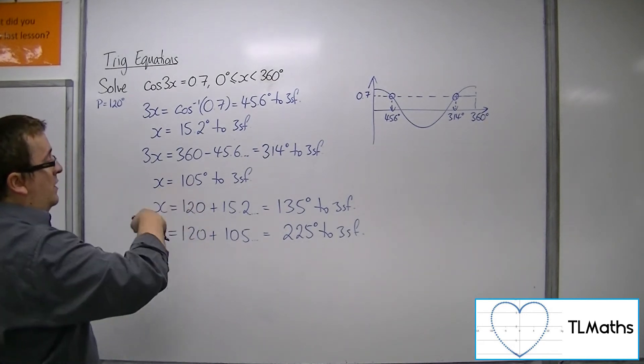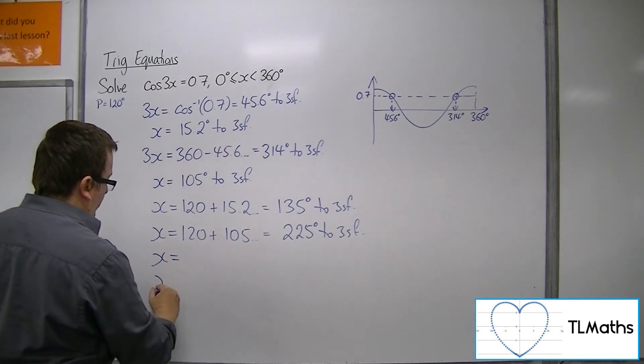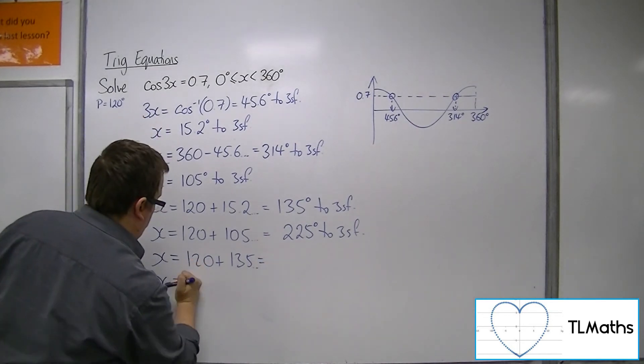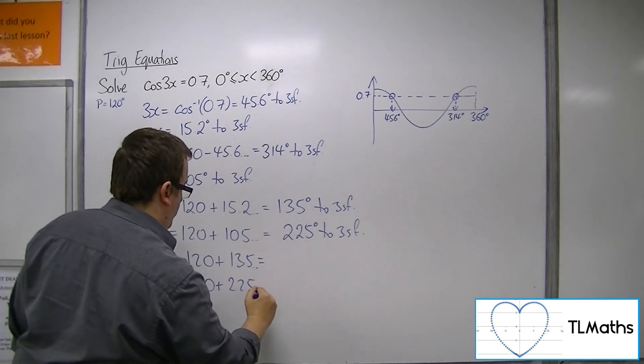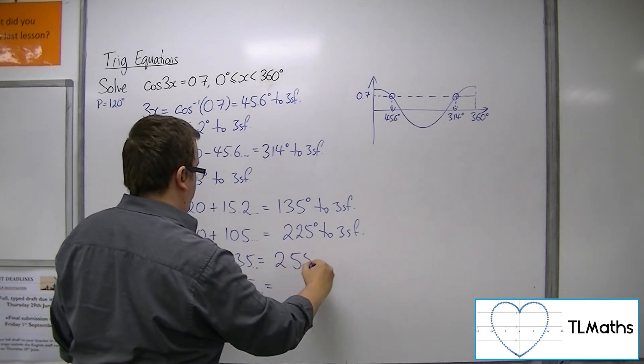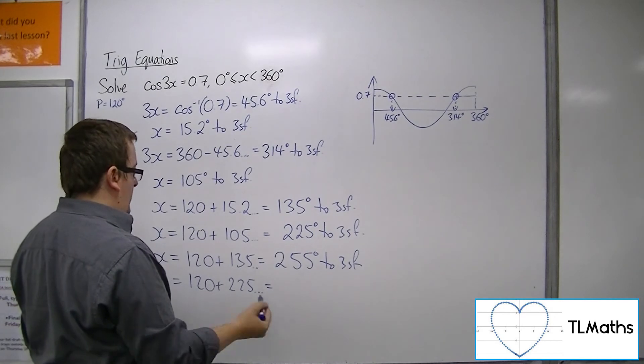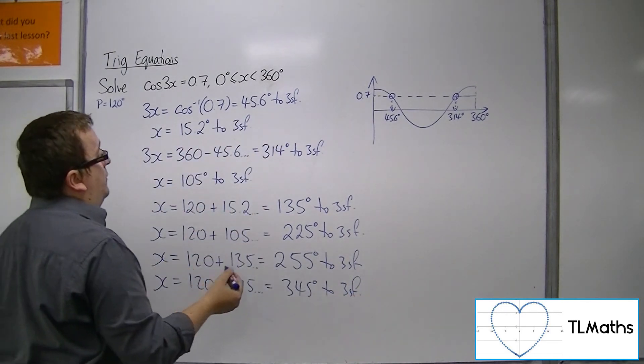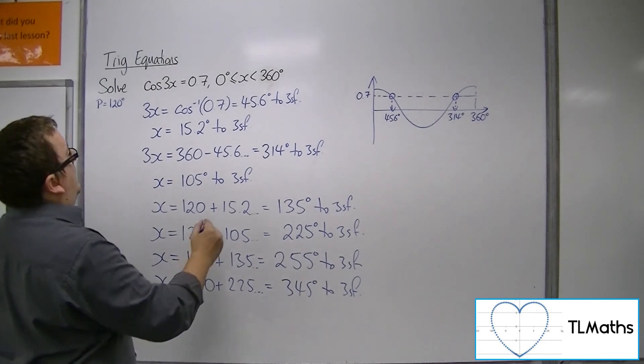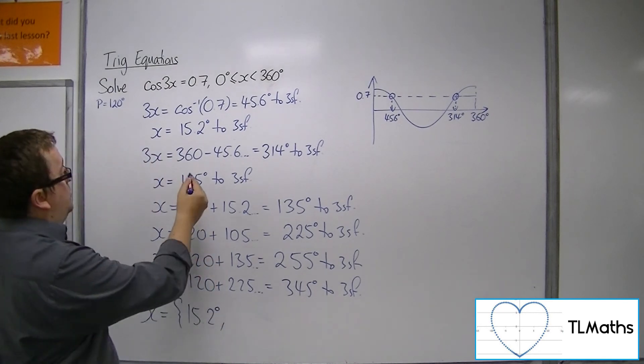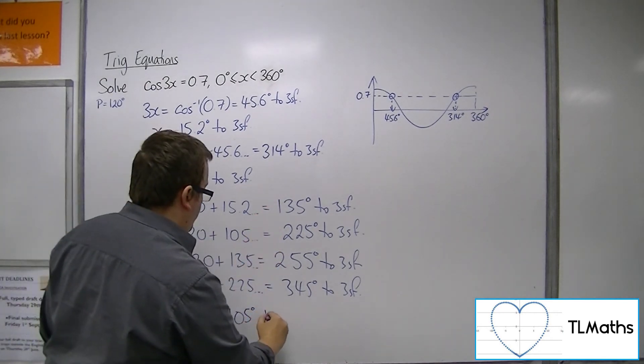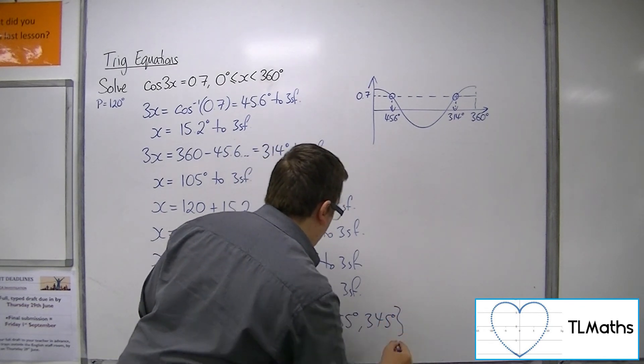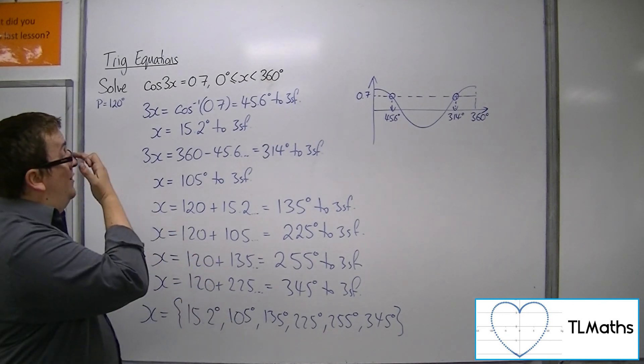Okay, so we'll get 255 degrees and we'll get 345 degrees. And as you can see, all of these solutions are between 0 and 360. So x is 15.2, 105, 135, 225, 255, and 345 degrees to three significant figures. They are the six solutions to the original problem.